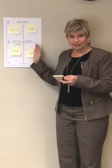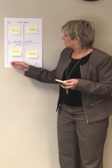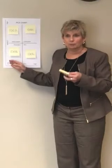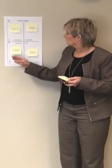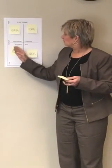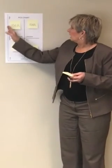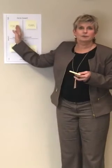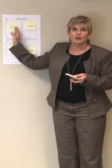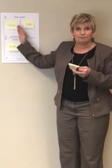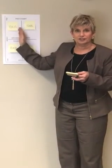So to review: the PICK chart is a tool used to categorize brainstorming ideas. If an idea has low impact on your key process indicators, your metrics, your department goals, and it's easy to implement, it goes in the Possible section. High impact and easy to implement — do it, get it done. This is where you want to focus most of your energy and time, because this is where you can make the best improvement with the least amount of effort.